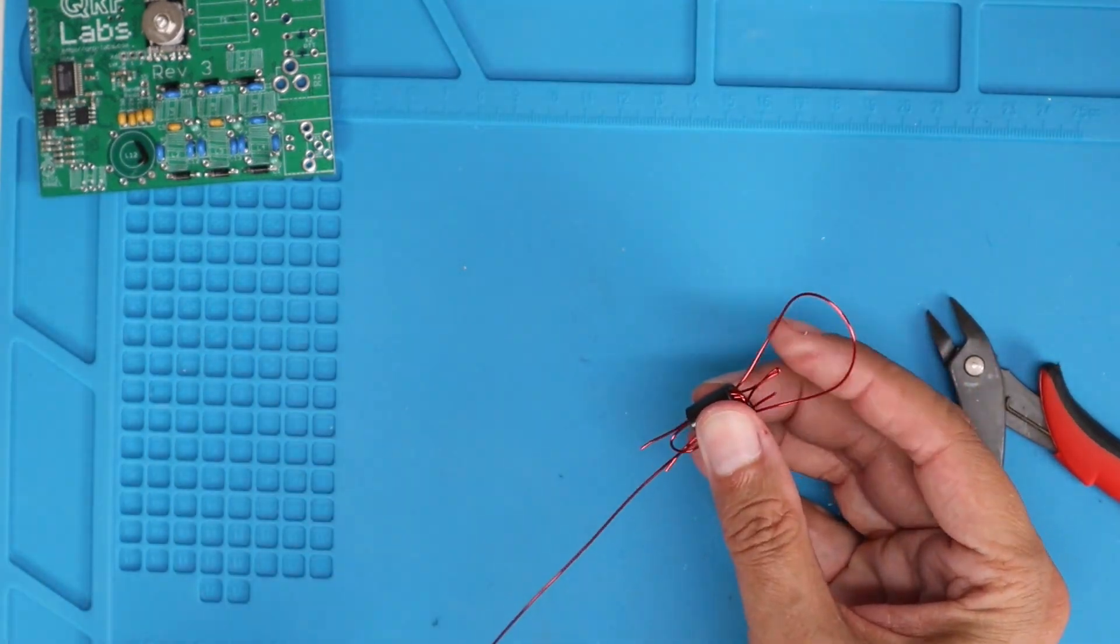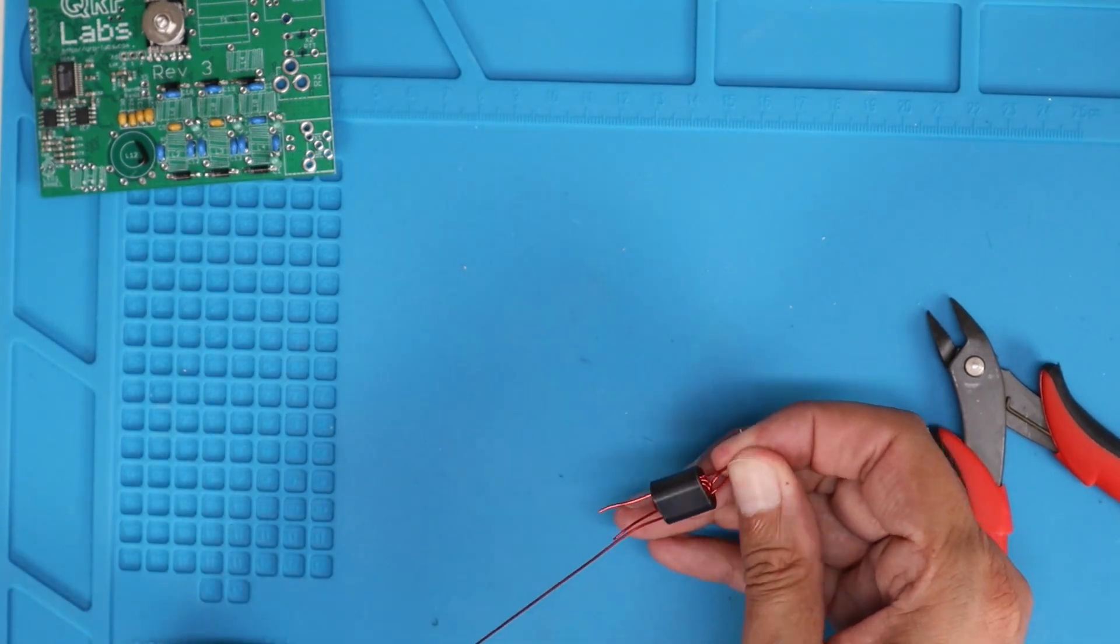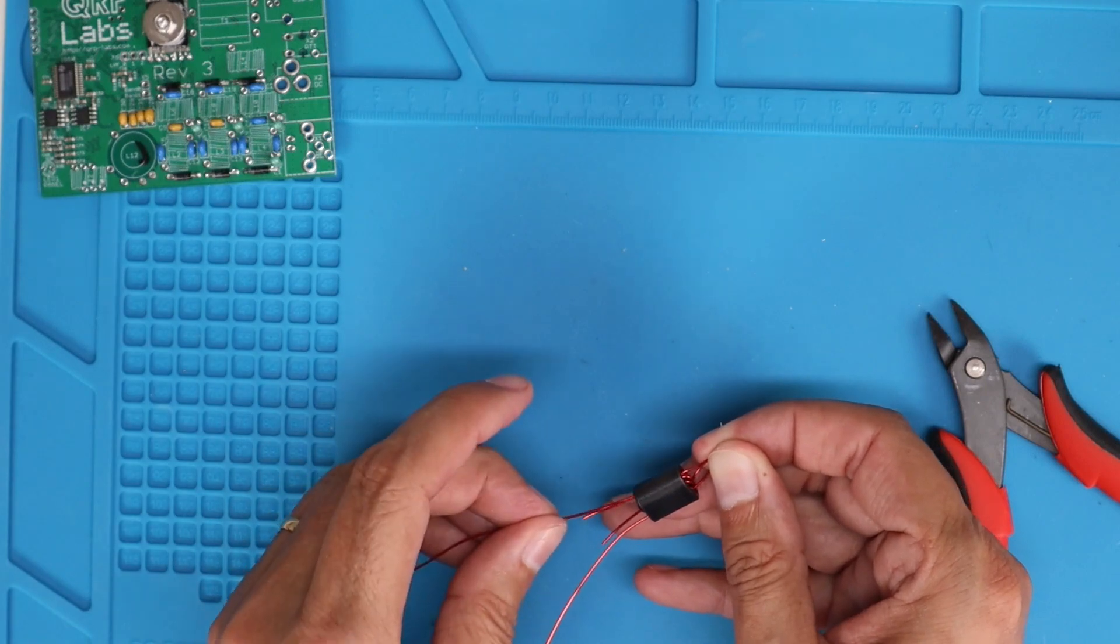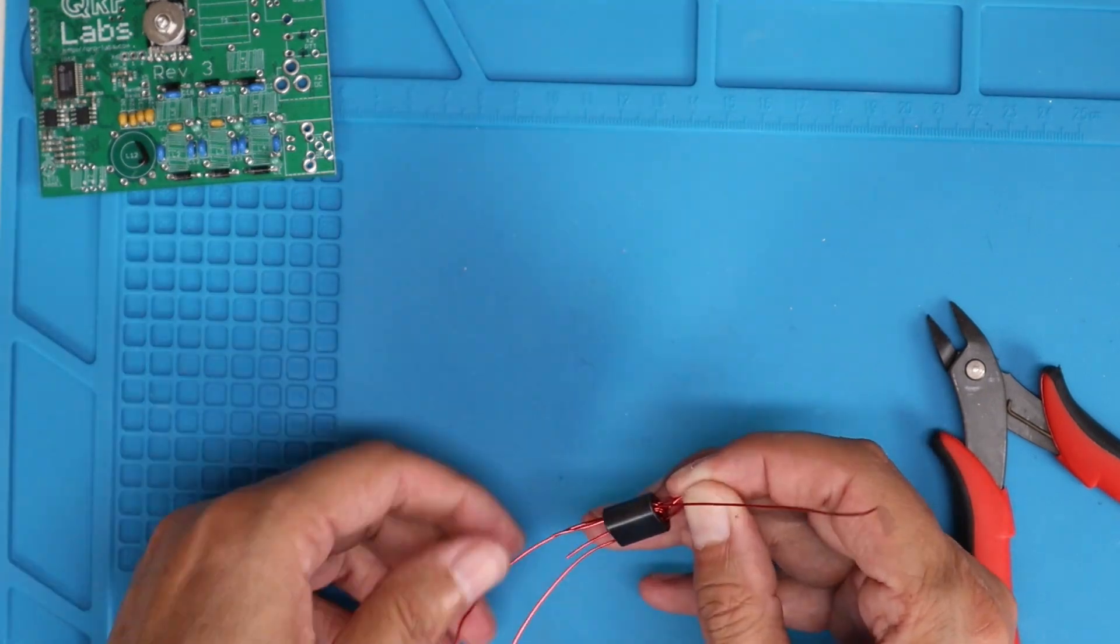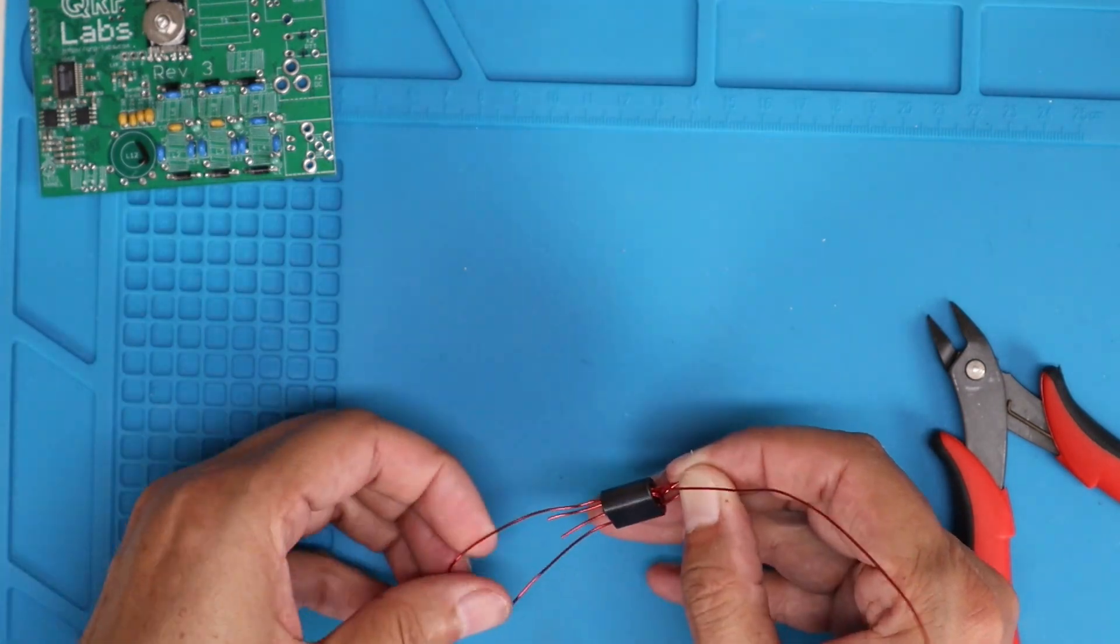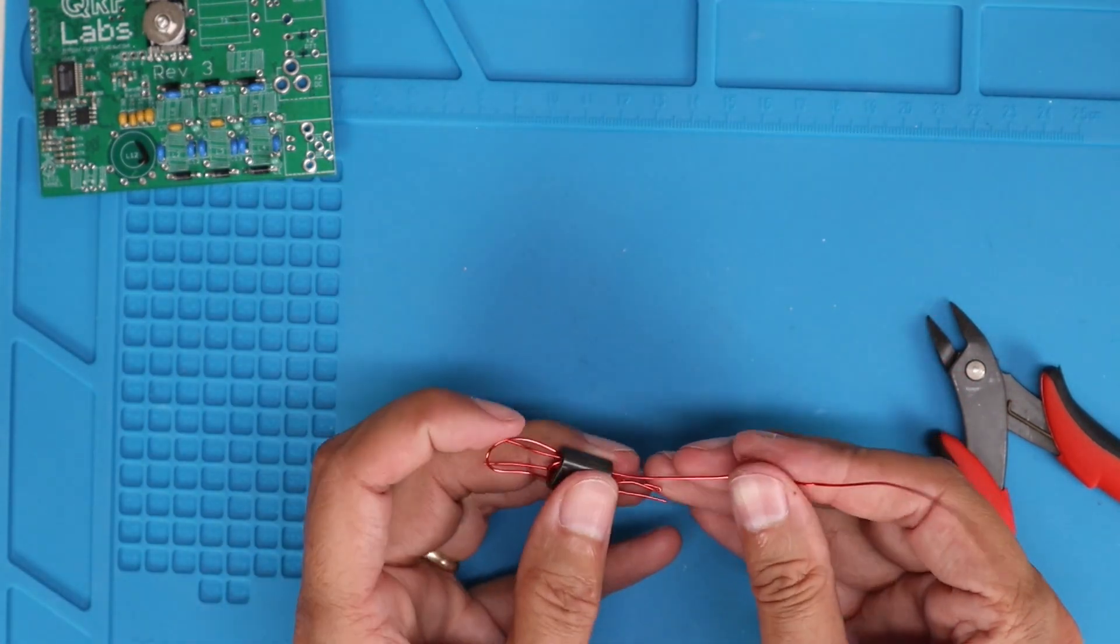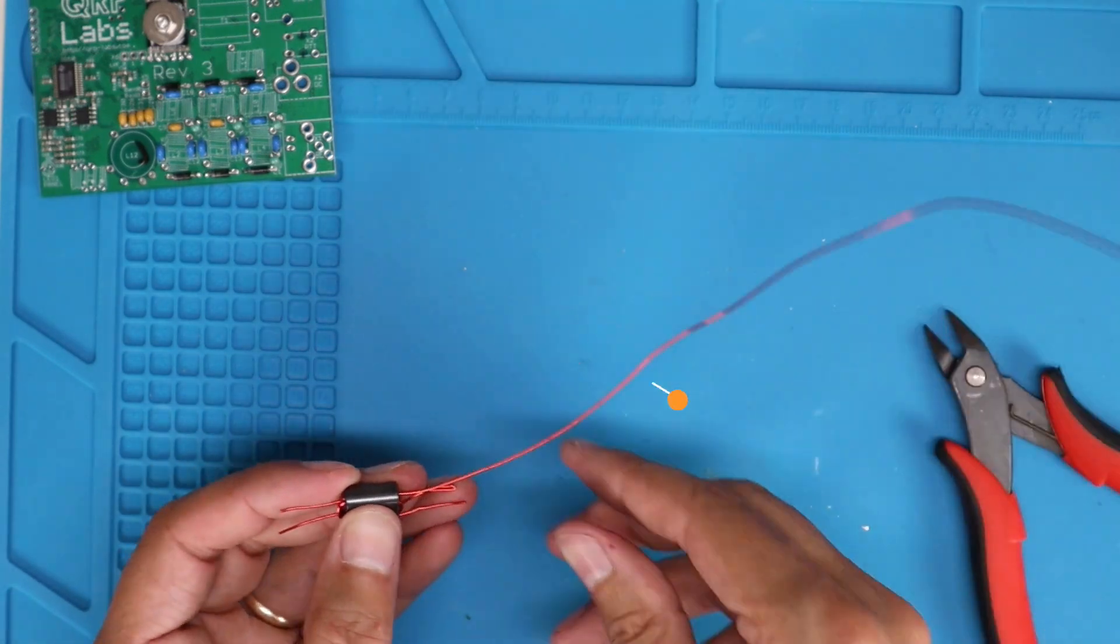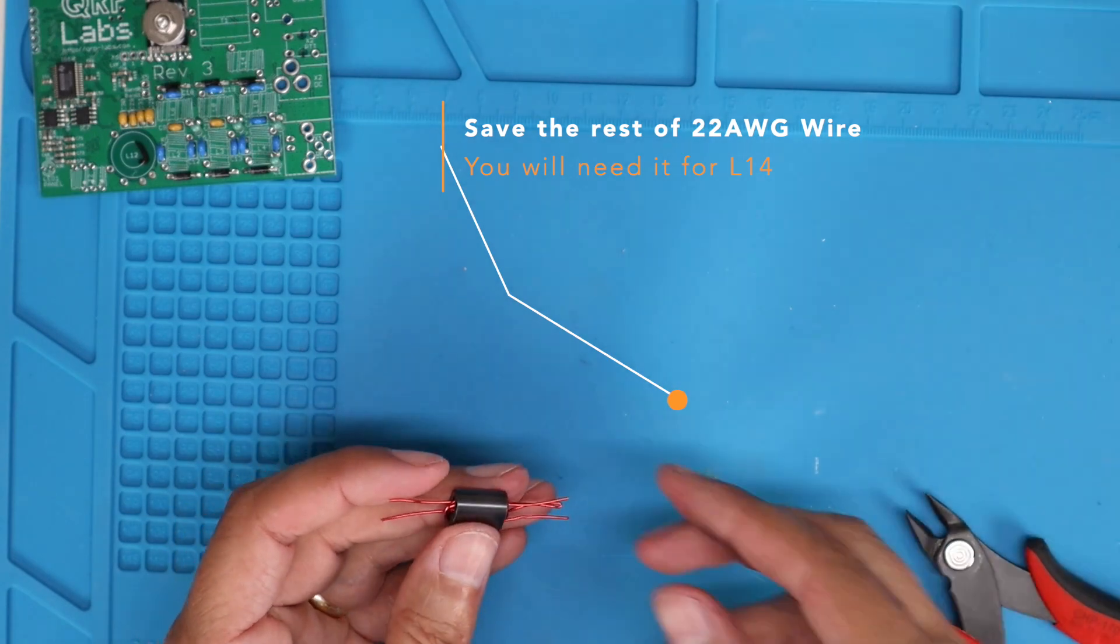But once you do that, go ahead and thread it through. Again, that's one and a half turns. And then the final turn right here will make two primary turns for this 12-volt T1. And then once you're done with that, we'll go ahead and trim it off. And that completes the winding of T1.